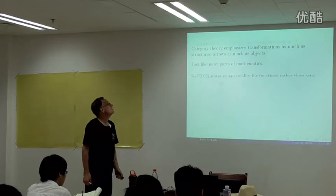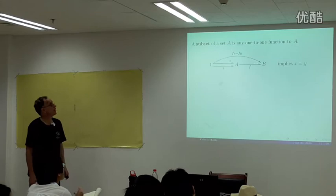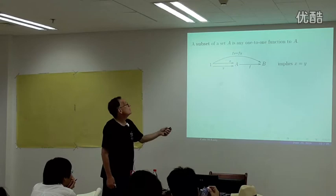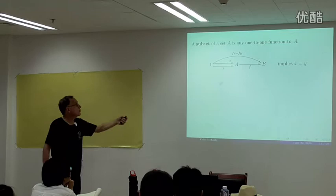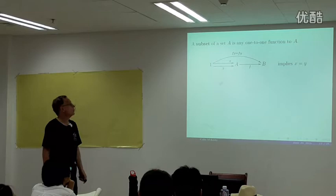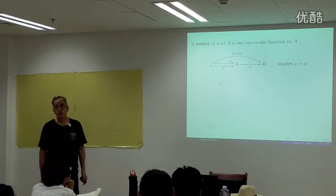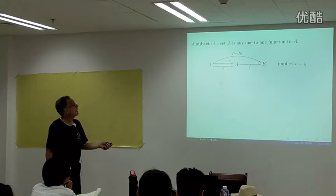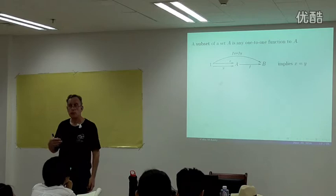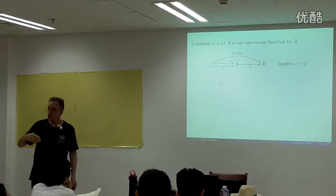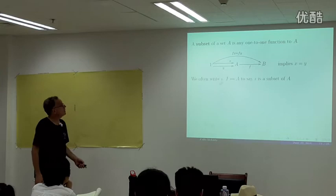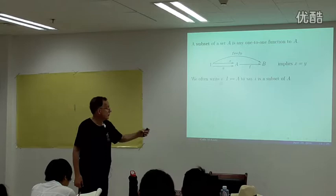A subset of a set A is any one-to-one function to A — meaning if f(x) = f(y) then x = y. This is not the ZFC definition of subset. It doesn't say the elements of one set have to be elements of another. Everything we're doing here is up to isomorphism, and I'll use the hooked arrow notation to indicate a subset or one-to-one function.